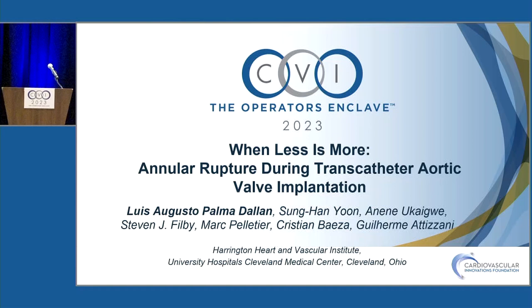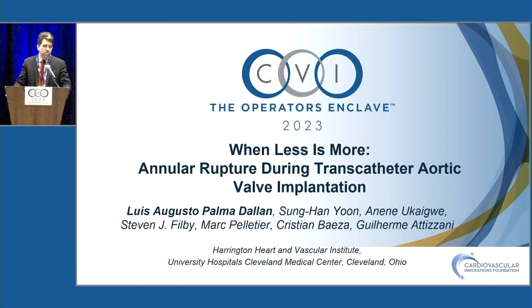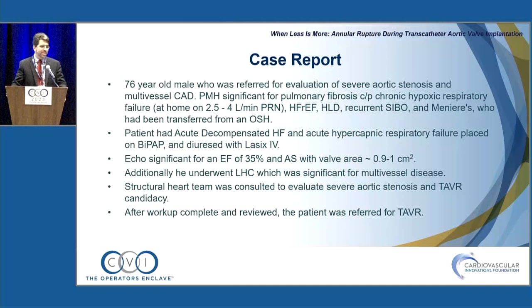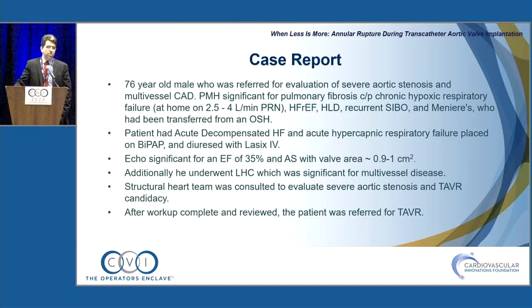We have Dr. Luis Augusto Palma-Dalen presenting 'When Less Is More: Annular Rupture During Transcatheter Aortic Valve Implantation.' On behalf of the structural heart team at University Hospitals — Dr. Tizani and Dr. Filby, the directors — presenting a very unique case. This was a 76-year-old male referred for severe aortic stenosis and multivessel coronary artery disease, with very significant pulmonary disease, home O2 dependent, low ejection fraction of 35%, and hyperlipidemia. He was transferred in decompensated heart failure. TTE showed EF 35% and mean gradient of 48 mmHg — severe aortic stenosis.